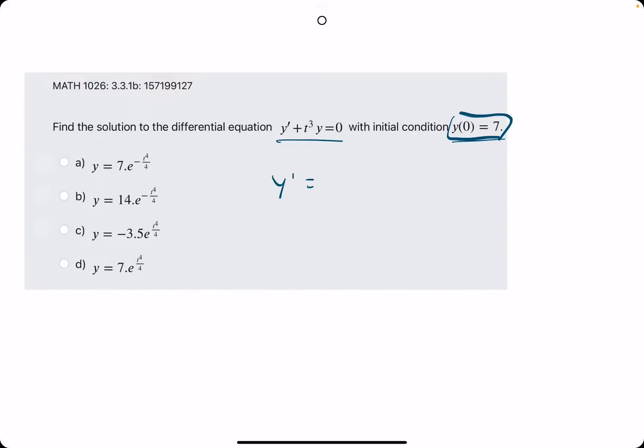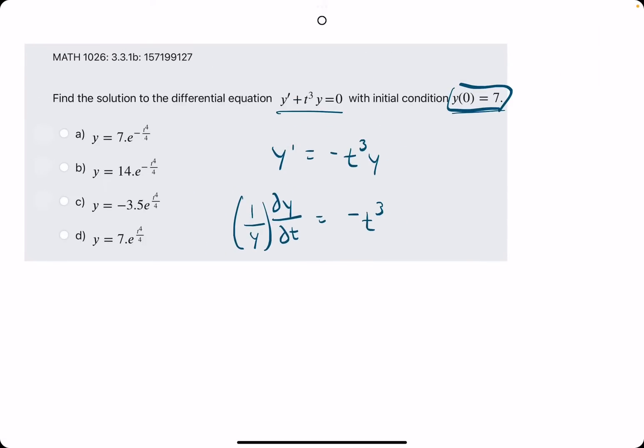Let's talk through it. We want to follow the same process. I'll start by getting y prime by itself on the left side and rewriting y prime as dy over dt, and I'll go ahead and simultaneously multiply by 1 over y in order to leave us with just negative t cubed on the right side. So multiplying by 1 over y on both sides leaves us with this.